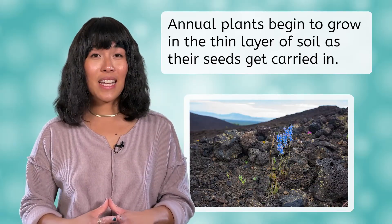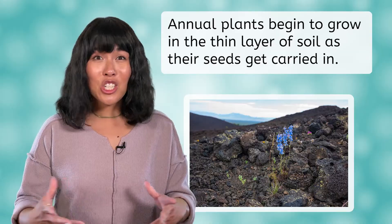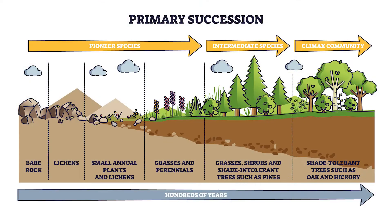This initial phase may take a hundred years or more. It's slow work for a tiny organism like a moss to break down a giant rock. This diagram shows the whole process of primary succession. Let's see what step we're at so far. We started with bare rock. Pioneer species such as moss and lichens moved in, creating a tiny layer of soil.